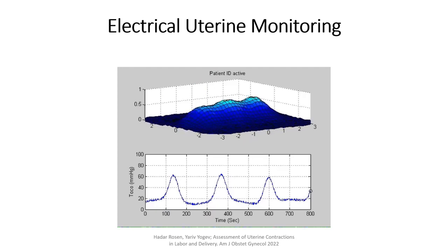While the IUPC records the pressure of a solitary point inside the uterus, the electrical uterine monitor measures numerous points on the uterine surface, allowing evaluation of the progression of the contraction wave. Electrical uterine monitoring may allow contraction intensity assessment in clinical scenarios such as pre-term labor or pre-ruptured membranes, yet some limitations such as false positive readings exist.